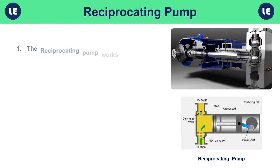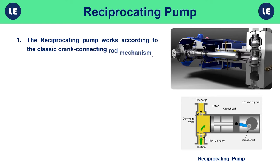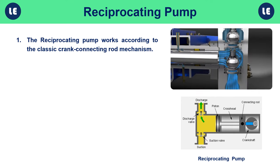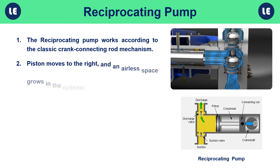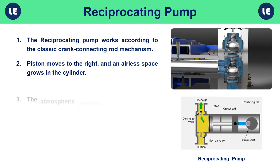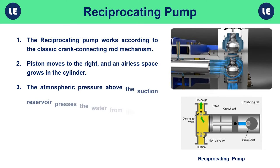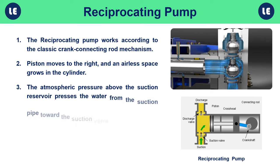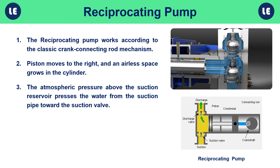The reciprocating or piston pump works according to the classic crank-connecting rod mechanism. Assuming the pipeline is filled with water and the piston is on the extreme left, when the piston moves to the right, an airless space grows in the cylinder. Atmospheric pressure above the suction reservoir presses the water from the suction pipe toward the suction valve, which opens and water flows into the cylinder until the piston reaches the extreme right.